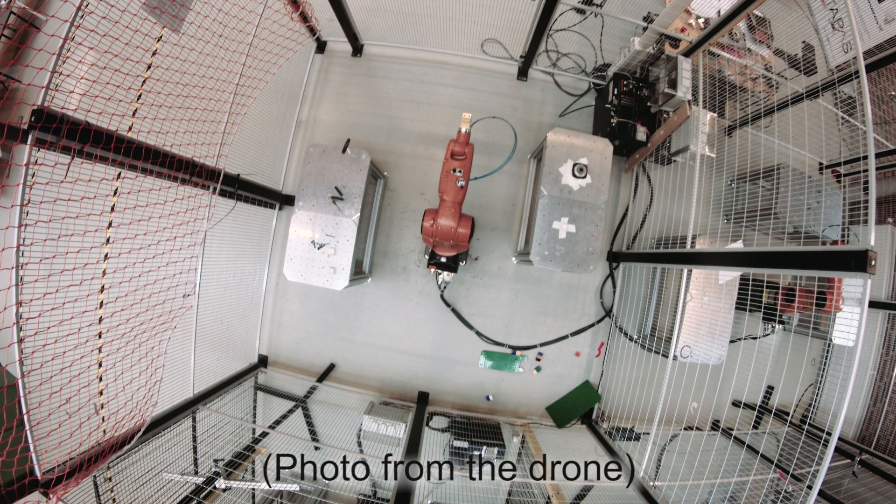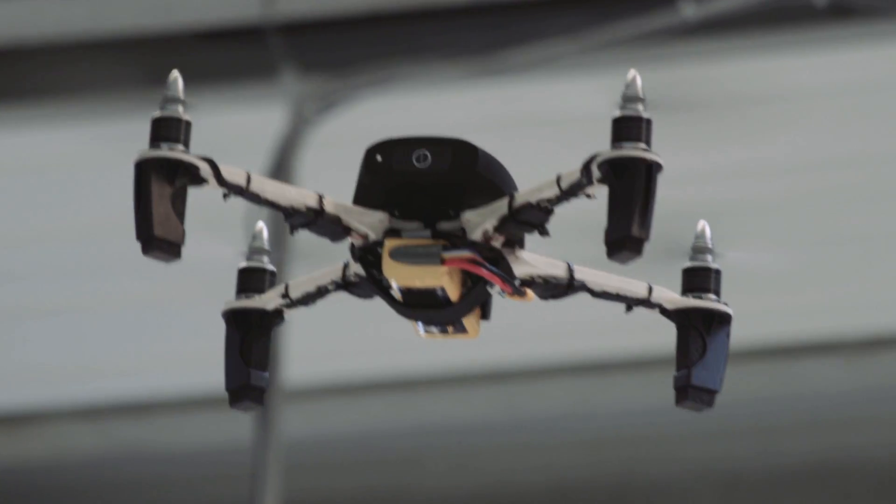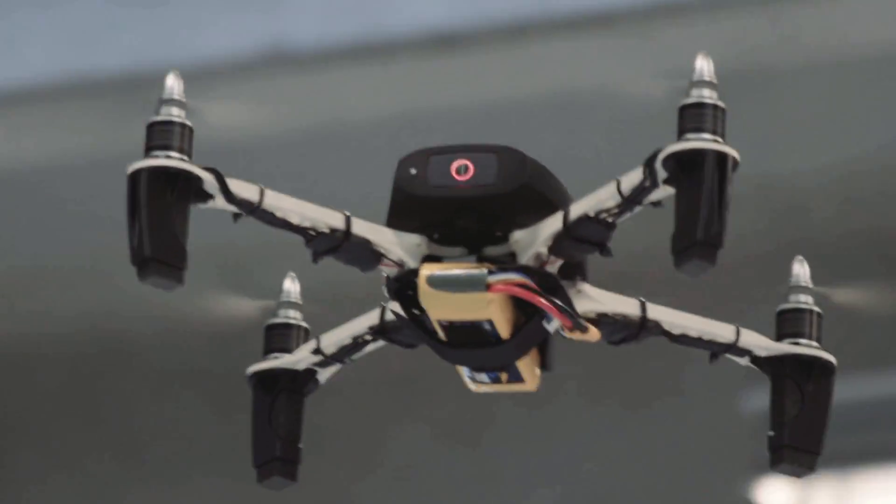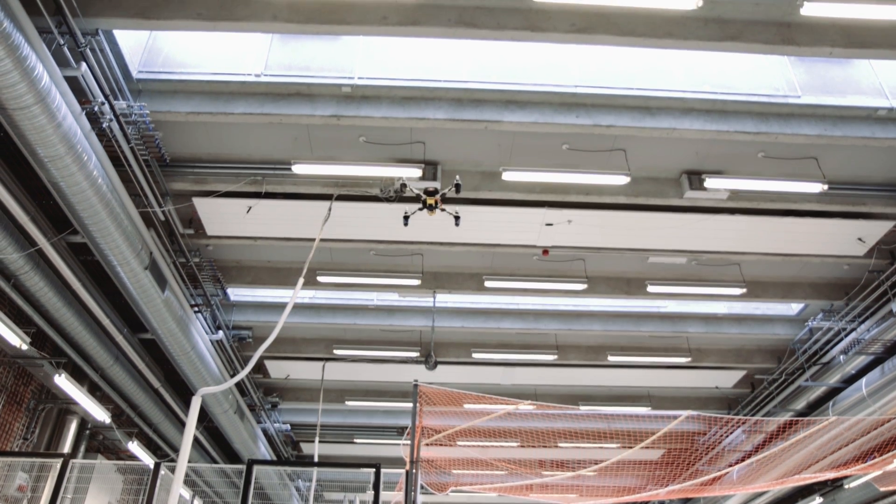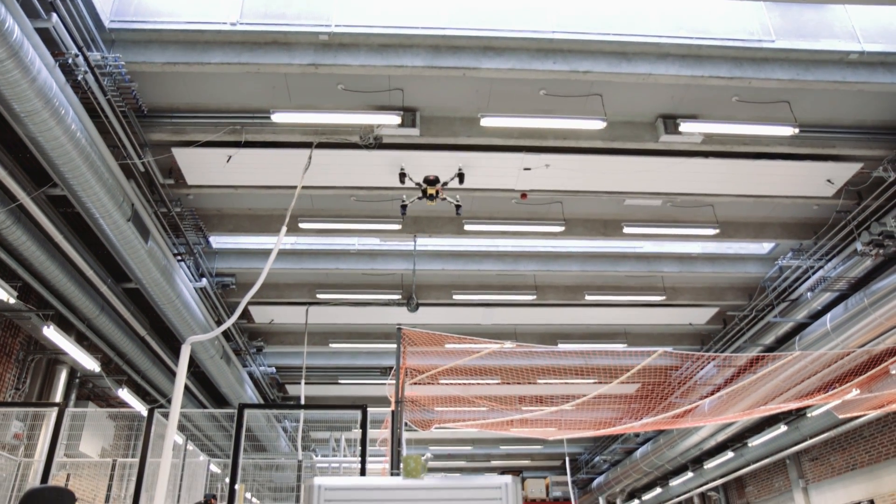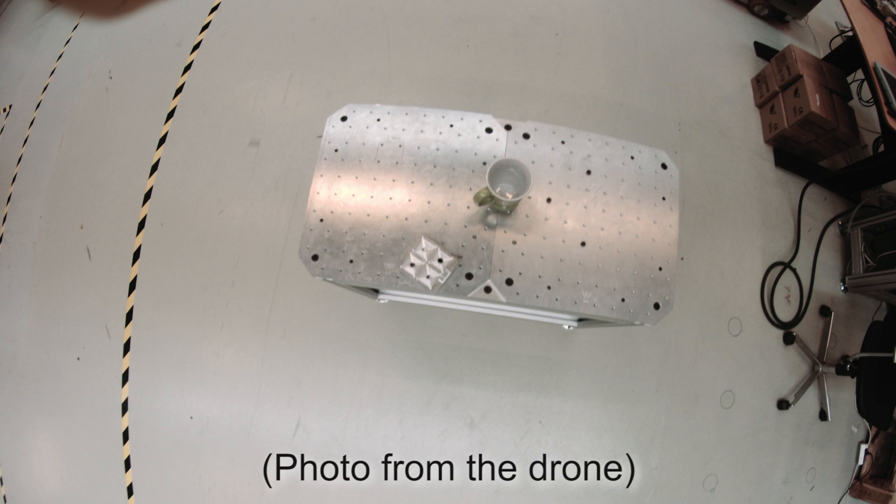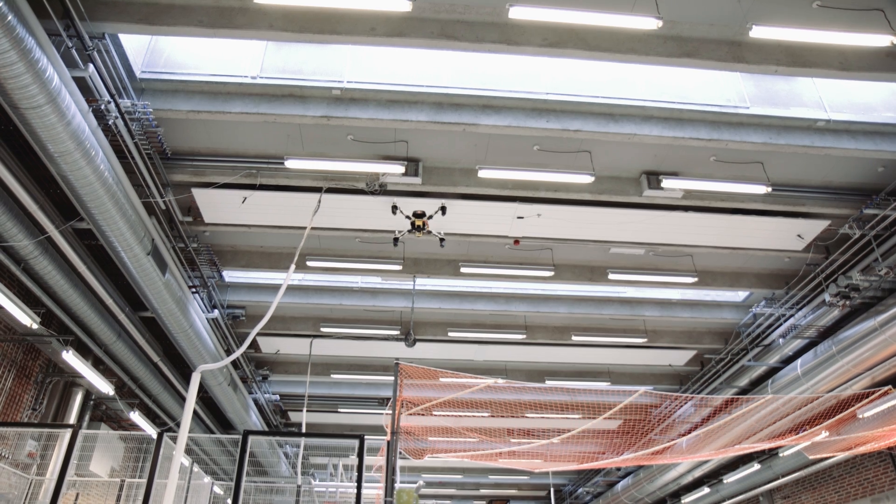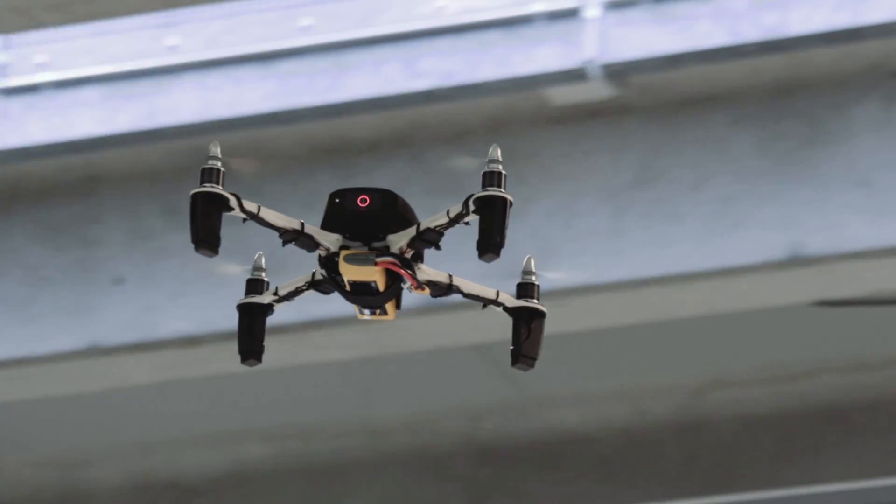The drone continues its journey to perform tasks according to instructions from the control system. The control system continuously monitors the operation and can reschedule tasks on the fly if something happens in production. Monitoring includes keeping an eye on the drone battery and bringing it back for recharging when necessary.